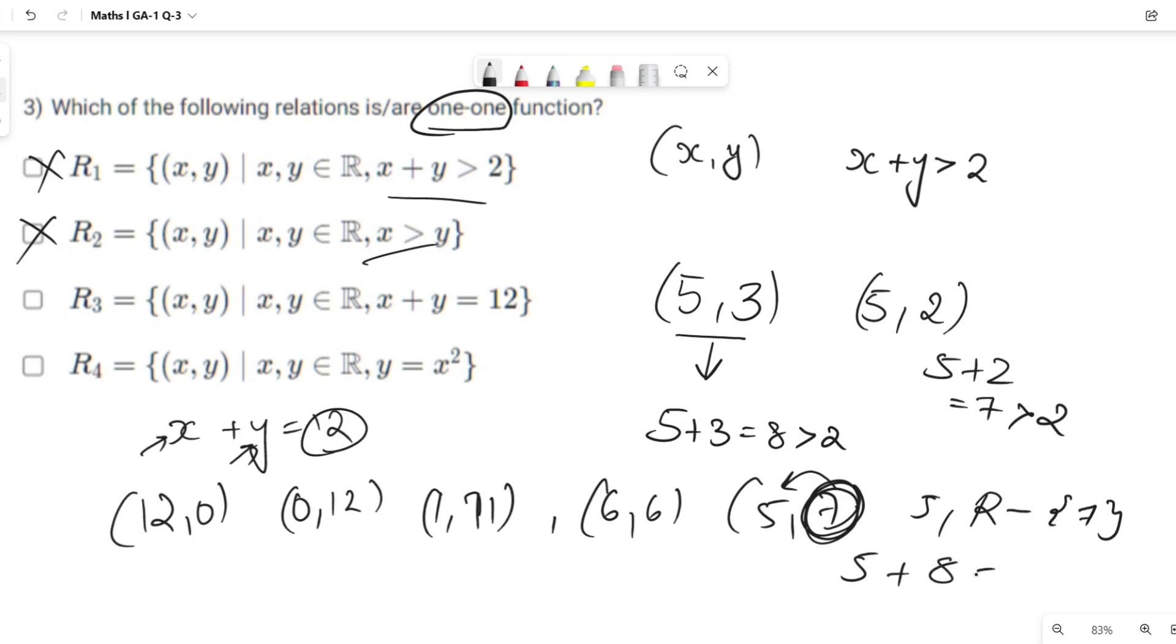5 + 8 ≠ 12, 5 + 7.1 ≠ 12. So it has unique relation. That's why it is 1-1 function.